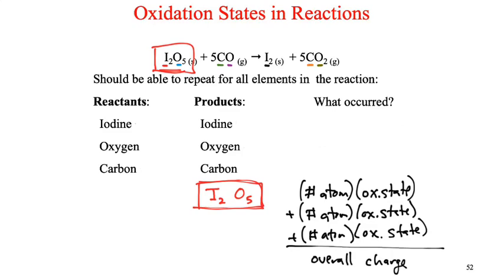Why did we not call them oxidation states? We didn't want to confuse you with it. Oxidation state is the balance of protons and electrons on an atom. Charge is the balance of protons and electrons in anything. If I'm looking at an atom, the charge will be the same as the oxidation state. So sometimes the oxidation state is intuitive or trivial. Other times it's not.